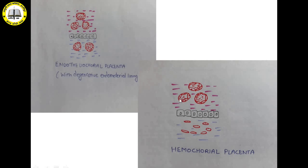In hemochorial type of placenta, all three layers from the maternal side — connective tissue, epithelial cells, and endothelial cells of blood vessels — completely degenerate. The blood, RBCs, and blood material are directly exposed. Hemochorial placenta is the most efficient type of placenta, with very swift exchange of materials and gaseous exchange, and it provides good protection. However, it is a deciduate type of placenta — the chorionic villi become embedded in maternal tissues and bathe directly in the blood pool, so at the time of childbirth there is loss of blood and maternal tissues.